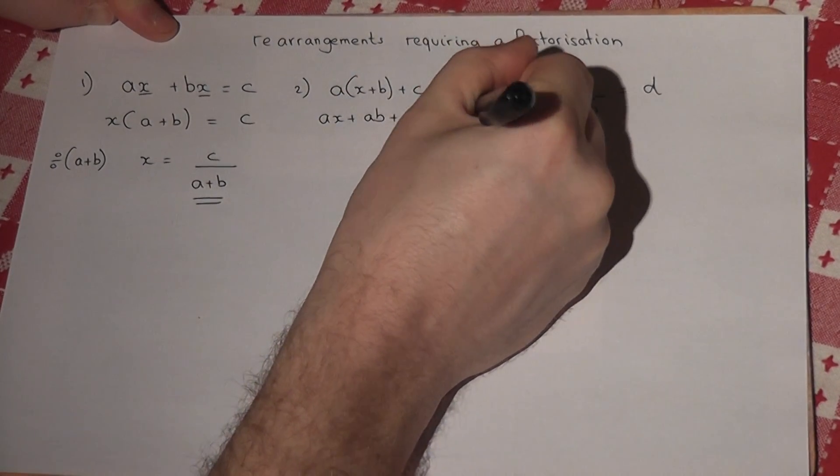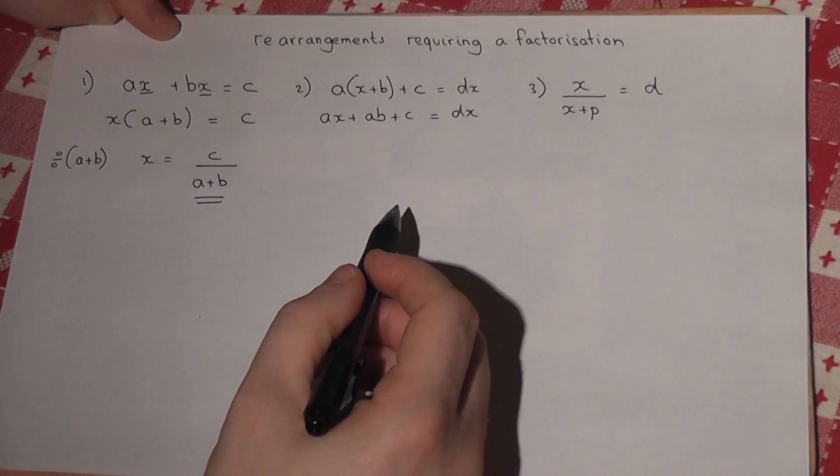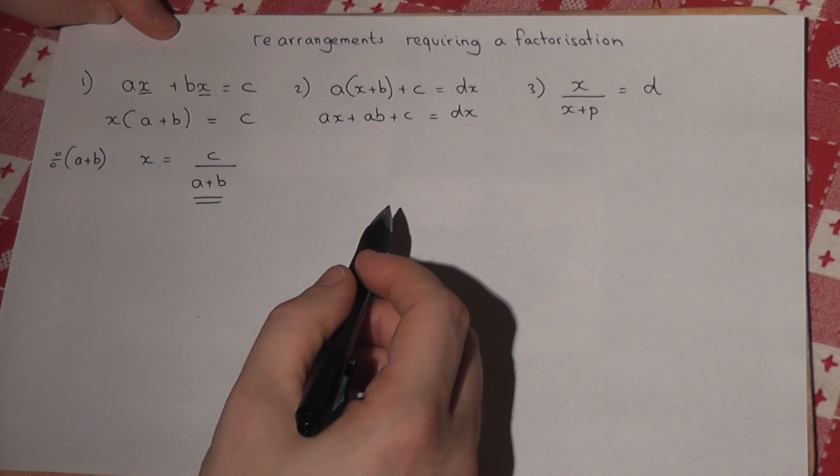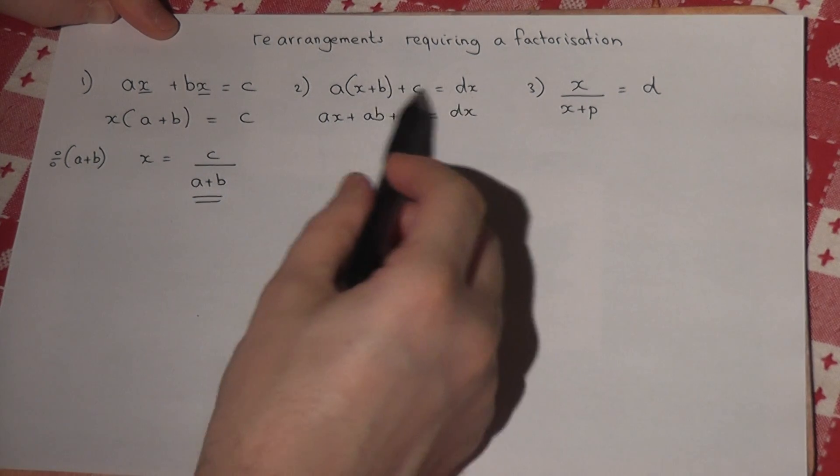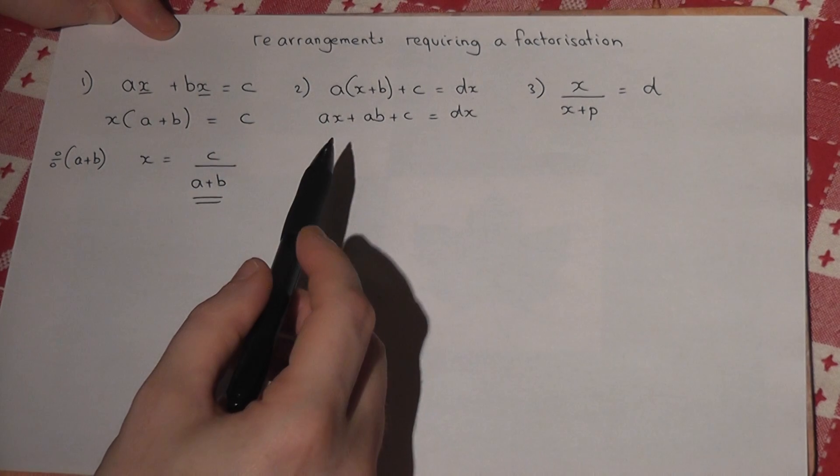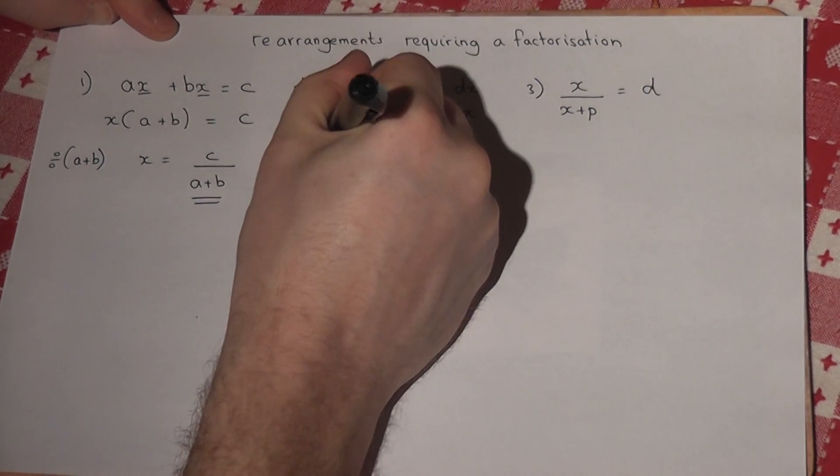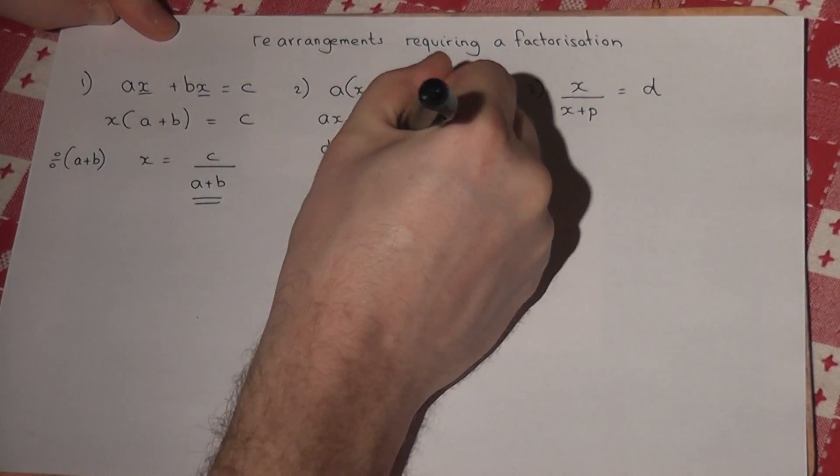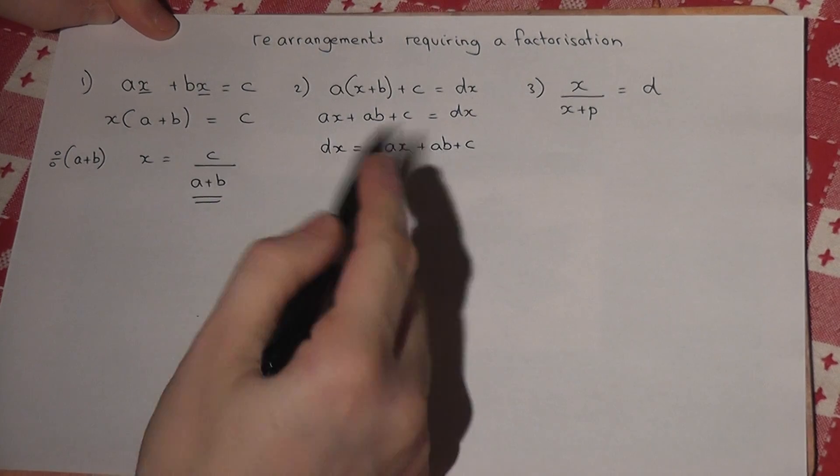Now I want to get the x to the same side, so just stop for a moment. I could put those terms over there and that term over here, but that's rather long. If I rewrite this as dx = ax + ab + c, and now just take away ax, that will cancel off.